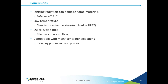Let's look at a few key takeaways for ionizing radiation. First, ionizing radiation changes materials on the molecular level, and many times these changes can adversely affect anything exposed. TIR17 is a great tool for predicting the severity of these changes ahead of time. Ionizing radiation is also a low-temperature operation, well suited for heat-sensitive products. Compared to ethylene oxide, cycle times are very low — even more so for electron beam, which only takes a couple of minutes. And ionizing radiation is compatible with a very wide selection of packaging styles and materials, both porous and non-porous.